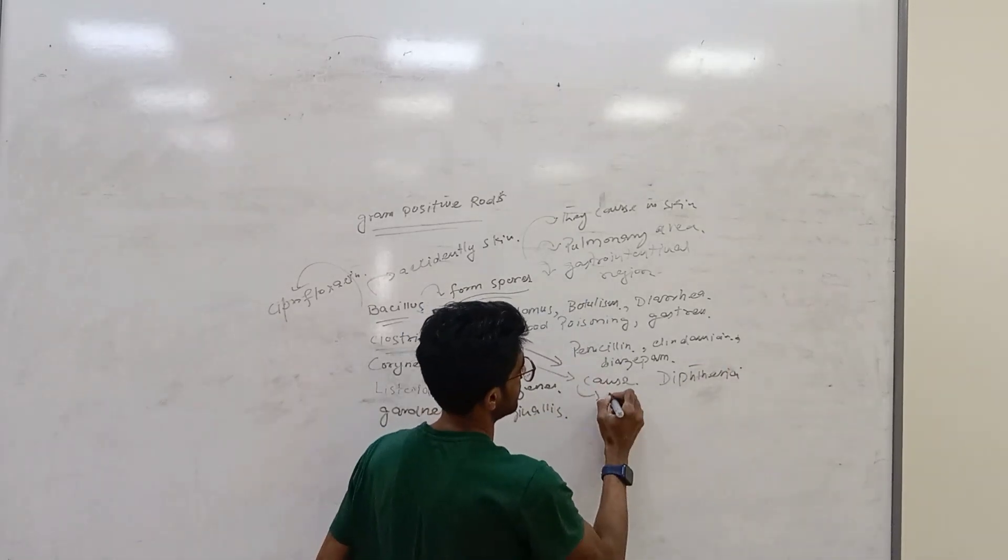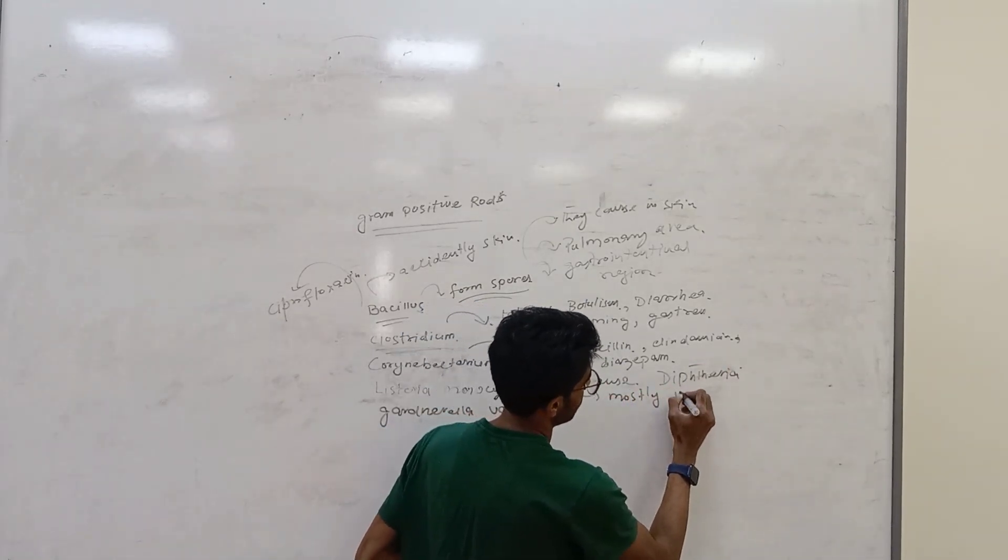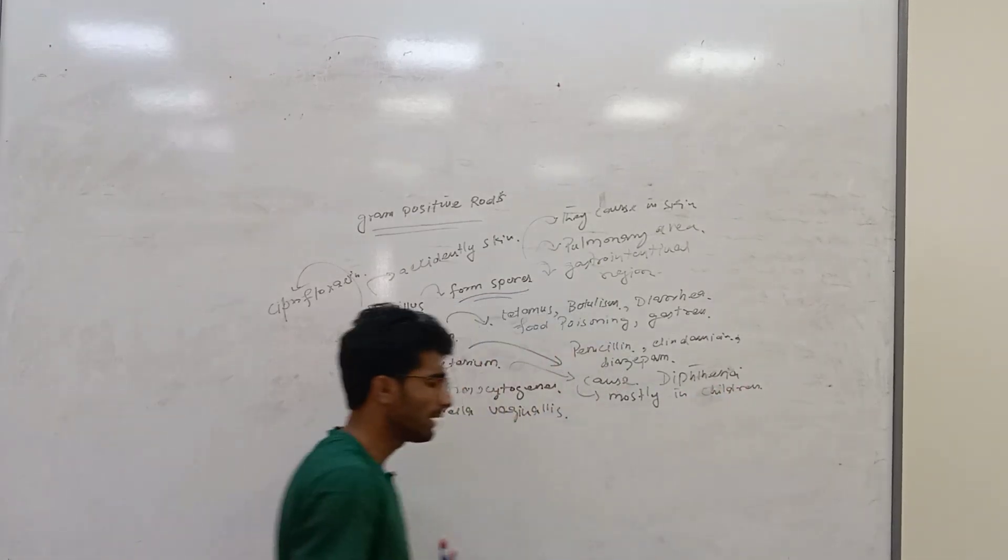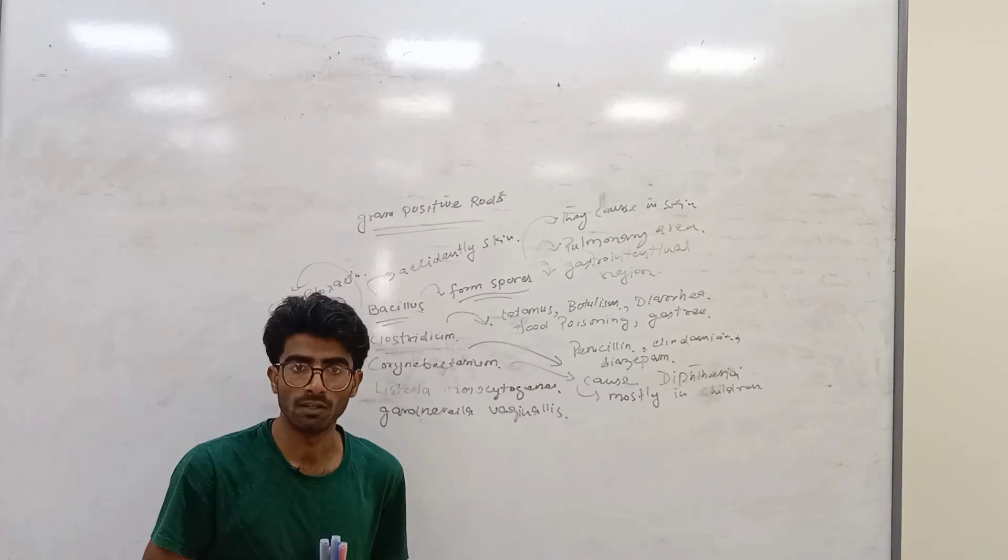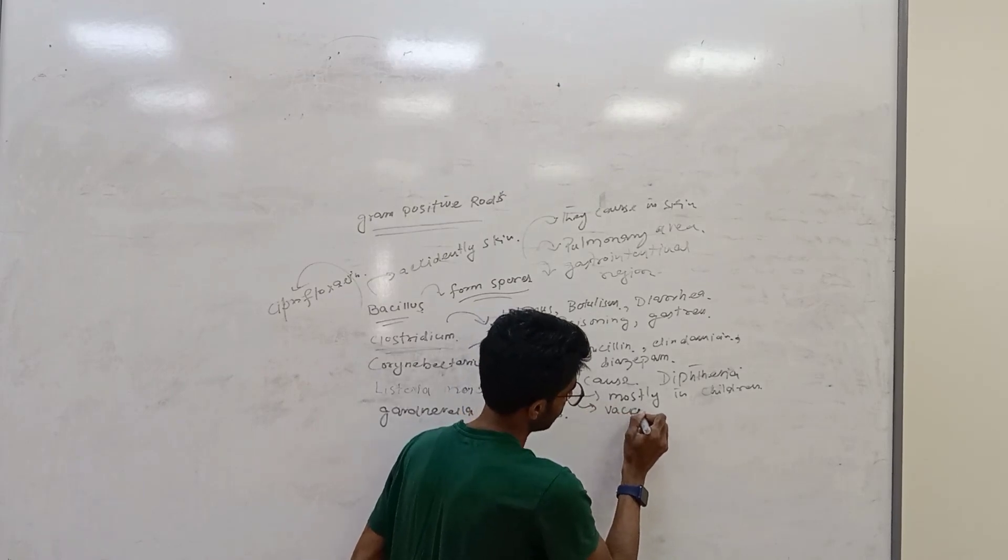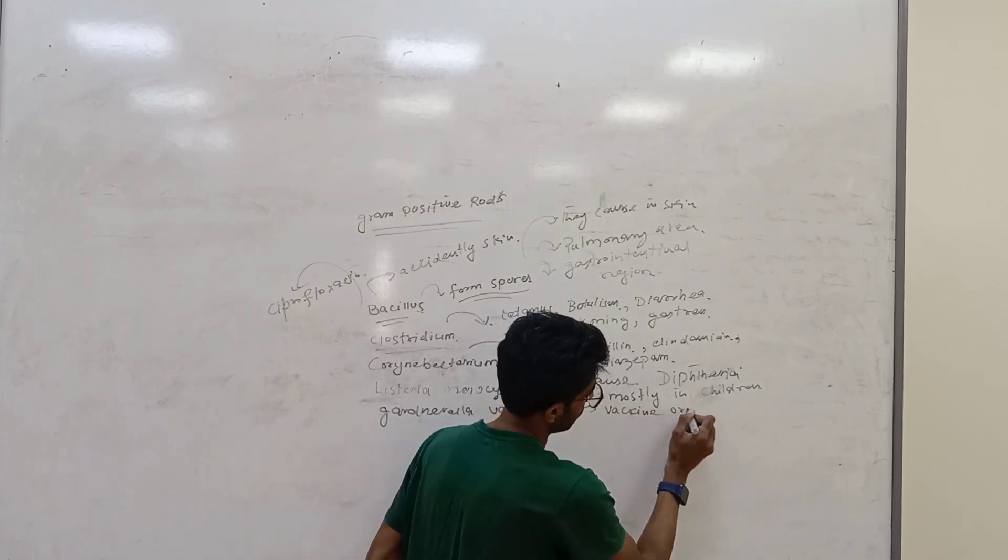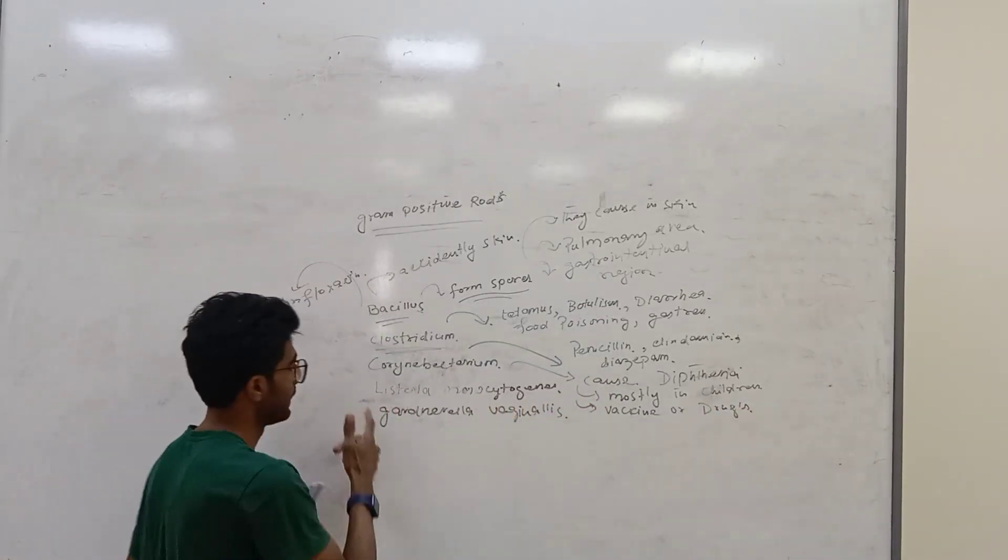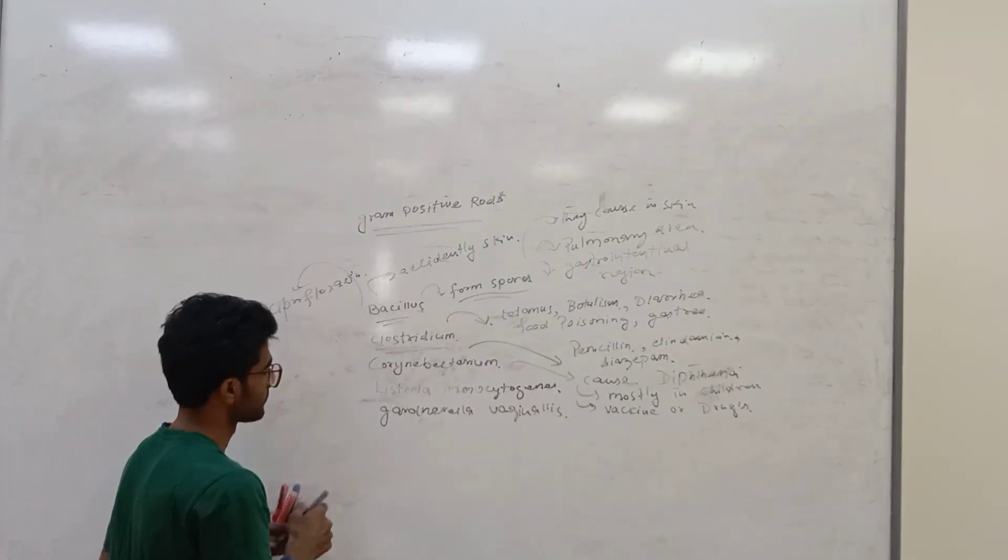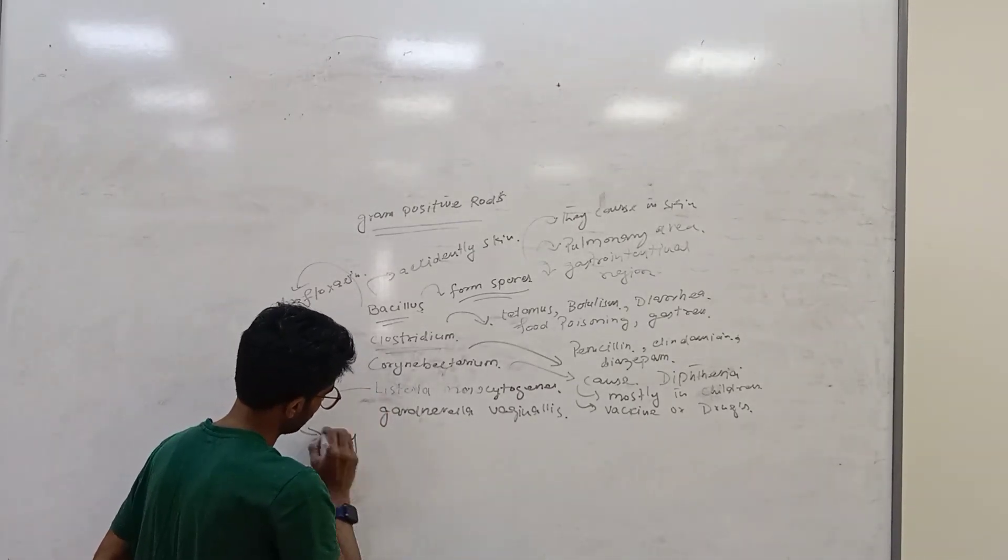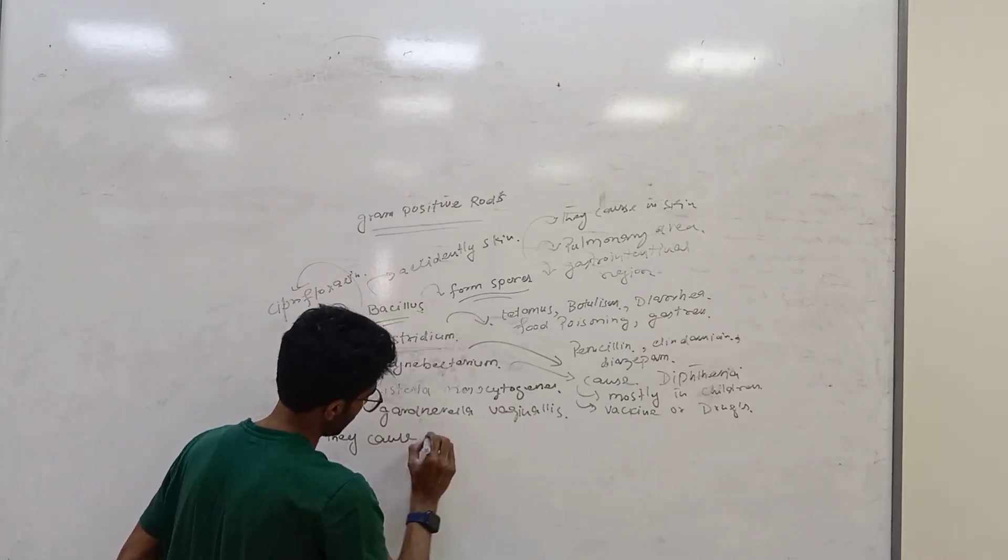Mostly in children. So what can we do for the treatment of diphtheria? We use drugs and we use vaccines. Listeria monocytogenes causes meningitis.